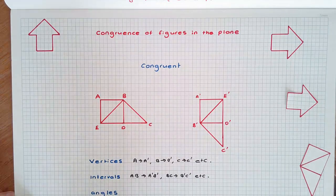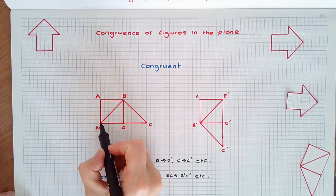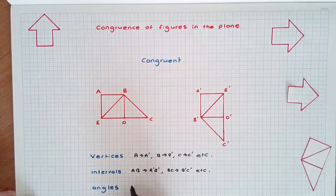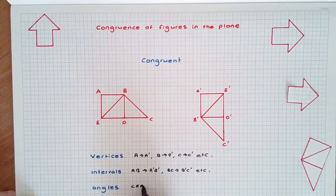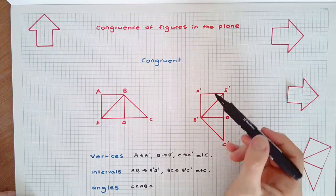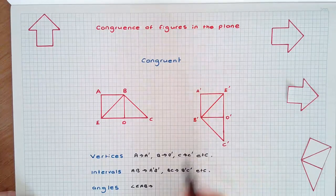And the angles, for instance, angle EAB became E dash A dash B dash.